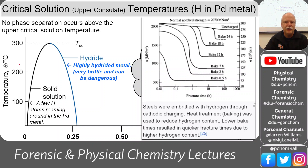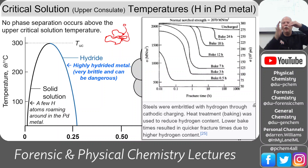This phase separation is what's going on. Also, if you have grains of metal, the hydrogen will find its way into the grain boundaries. The little hydrogen atoms collect in those grain boundaries, and so the metal just breaks along them.